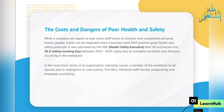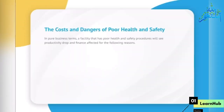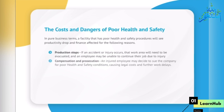In the most basic terms, if an organisation indirectly causes a member of the workforce to be injured due to negligence or cost-cutting, this will influence staff morale, productivity, and employee availability. In pure business terms, a facility that has poor health and safety procedures will see productivity drop and finances affected.